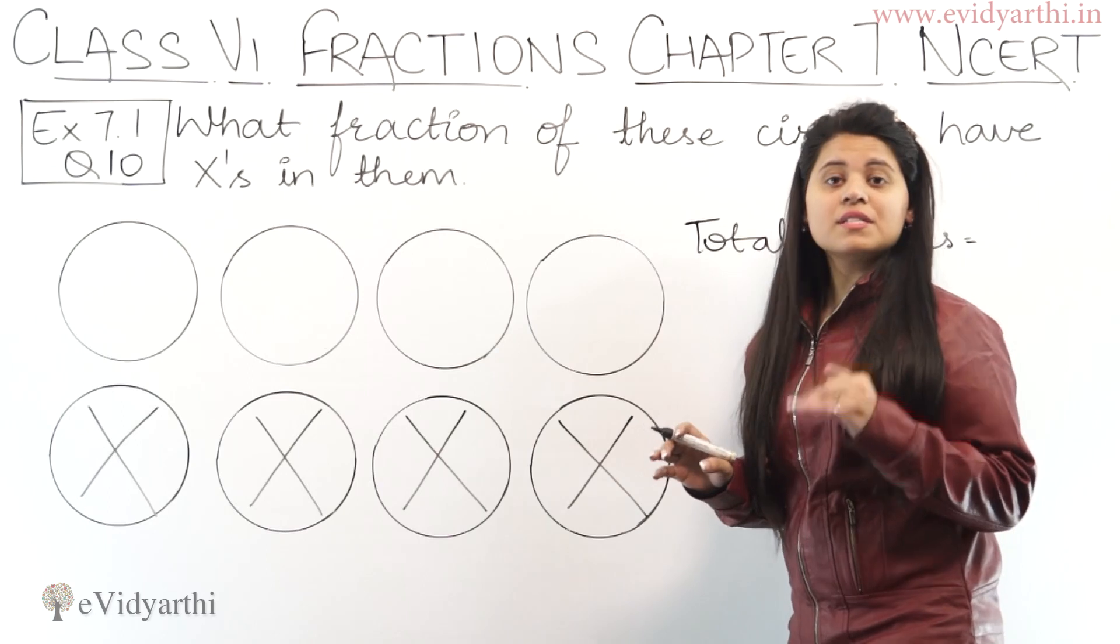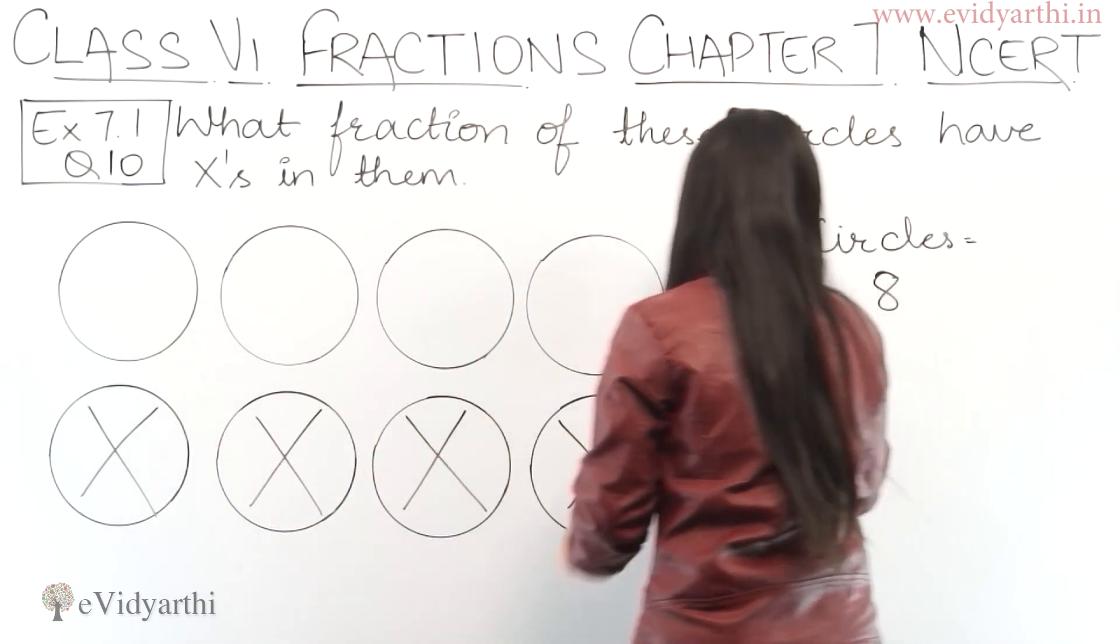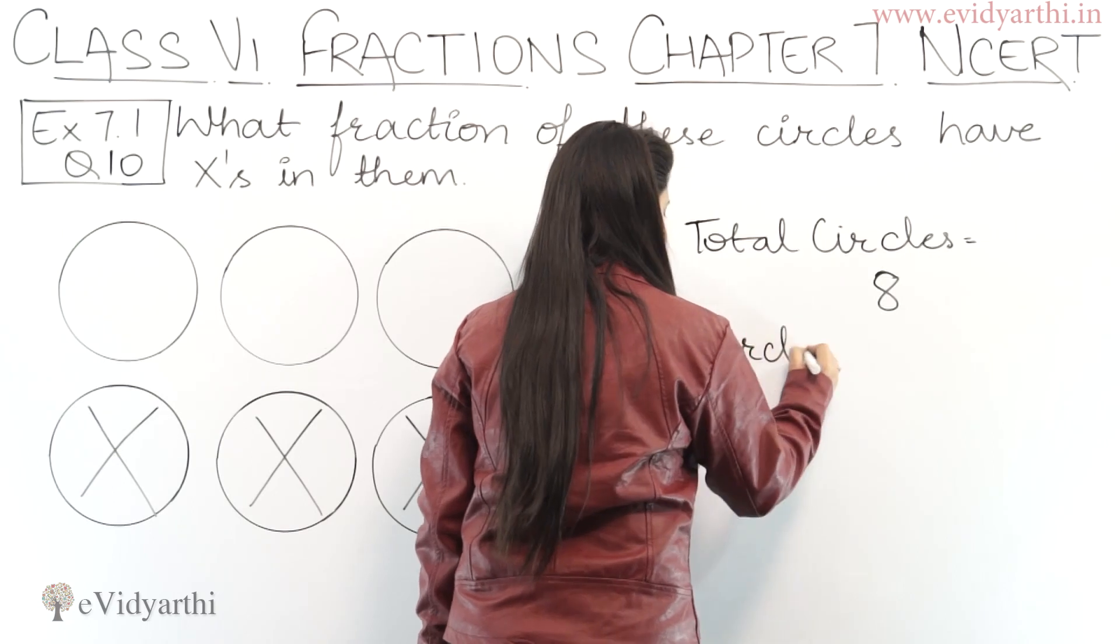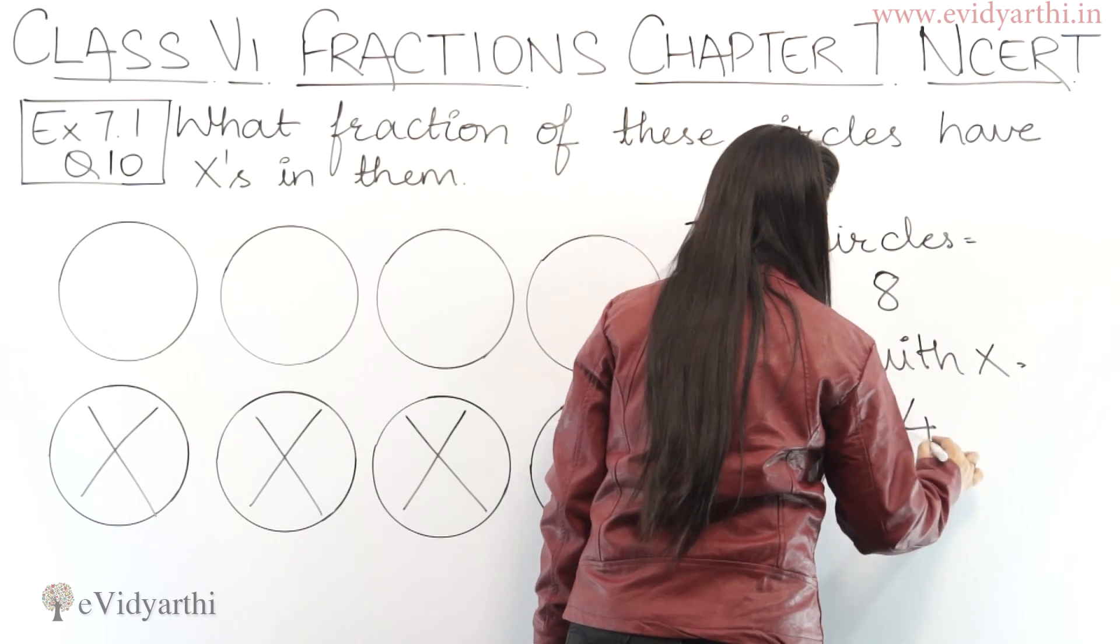Right, now in this, the circles with x in them are 1, 2, 3, 4. So circles with x equals to 4.